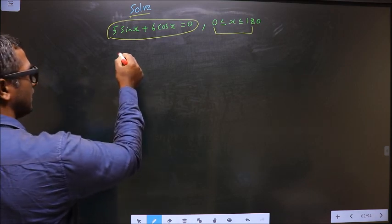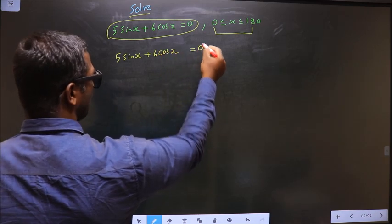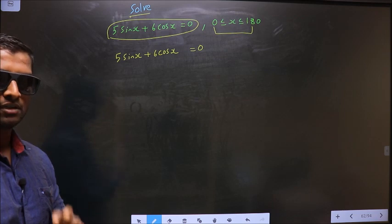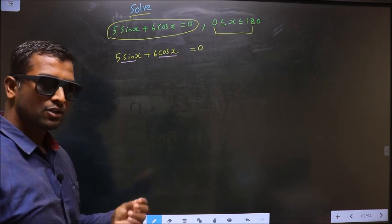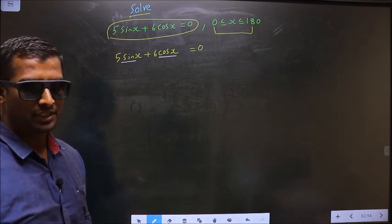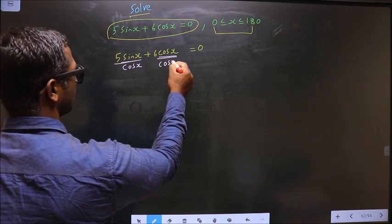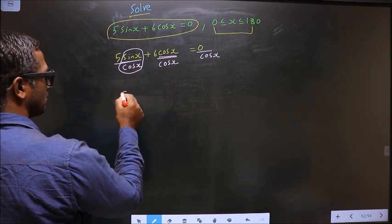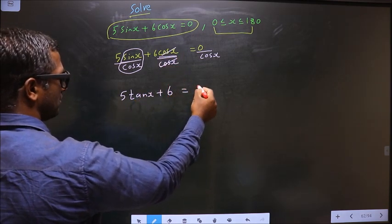Here the given equation is 5 sin x plus 6 cos x equal to 0. Now in this trigonometric equation there are two trigonometric ratios present. They are sin and cos, but to solve it there should be only one trigonometric ratio present. To convert this to one trigonometric ratio what we should do is divide each term by cos x. Why did we divide? Such that here sin by cos will result in tan and here it cancels out, you get 6 equal to 0.